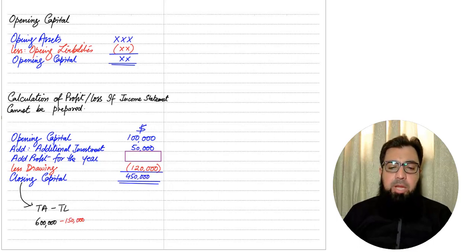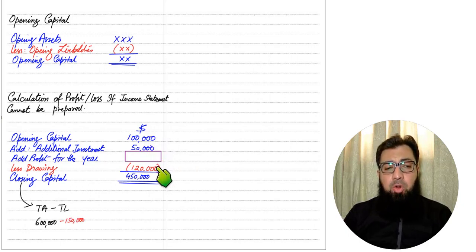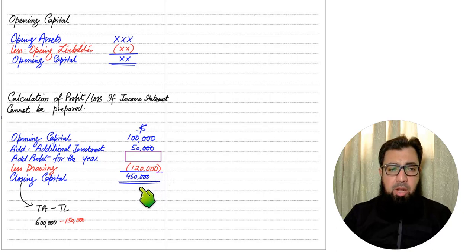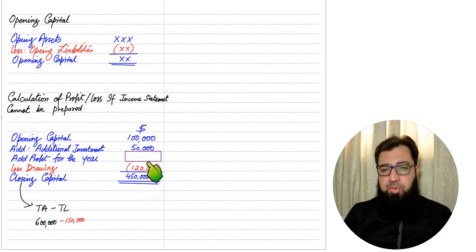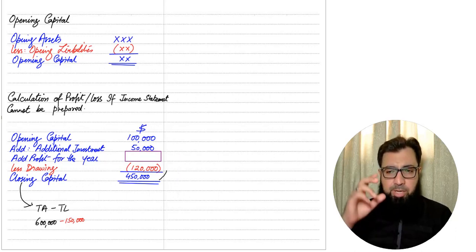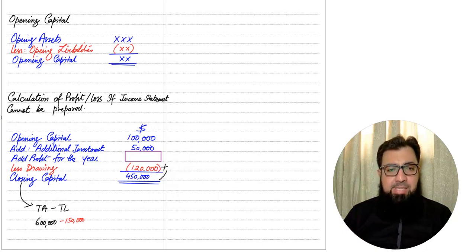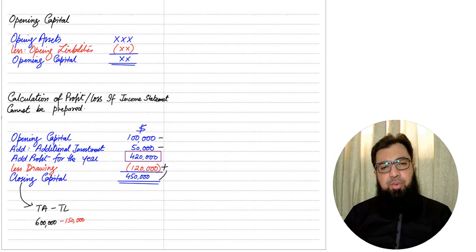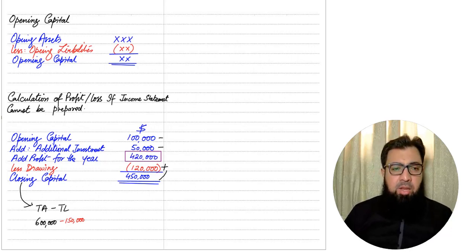Suppose total assets are 600,000 and total liabilities are 150,000, giving closing capital of 450,000. Now, when we add opening capital, additional investment, and profit, then deduct drawings, we arrive at closing capital. Since closing capital is already calculated and we do not have the profit figure, we can calculate profit by reverse working — starting from closing capital at the bottom, adding back drawings, and subtracting opening capital and additional investment.